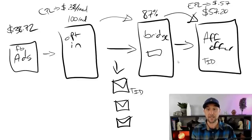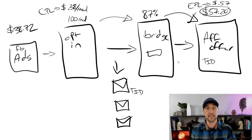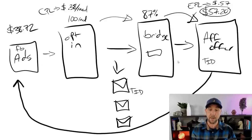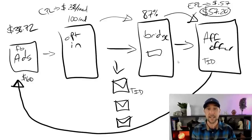This means for every lead I'm able to get from Facebook, I'm earning about 19 to 20 cents cashflow positive per lead. I started with $40 and now I've earned $57. I'm taking all $57 and reinvesting it back into my business — not taking that $20 out. So in the next couple of days I can go from spending $40 to spending $60. If the numbers hold, $60 will turn into $80, then $80 into $100, then $100 into $150, and on and on.